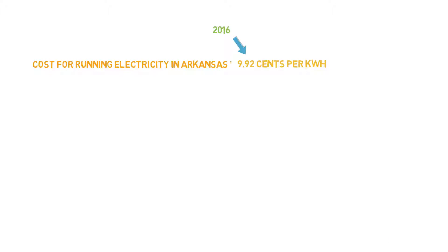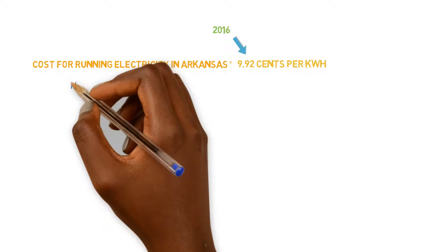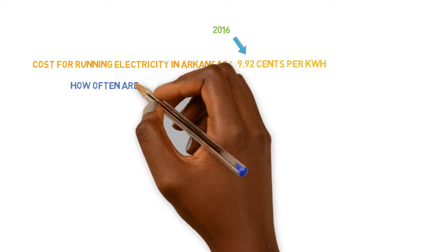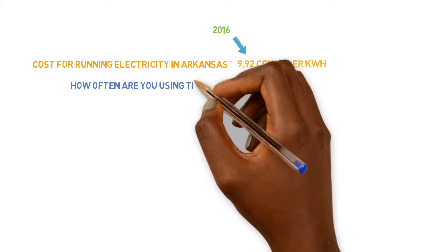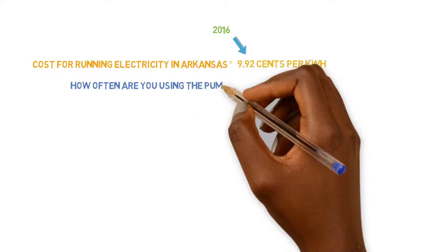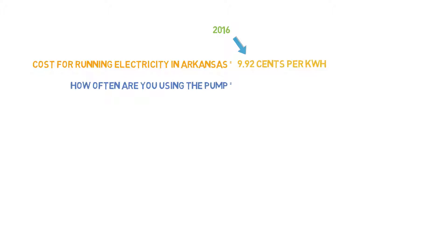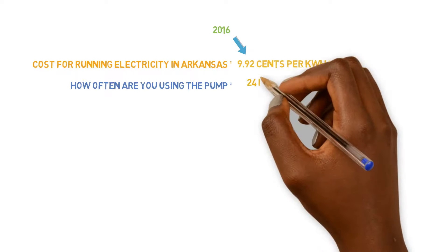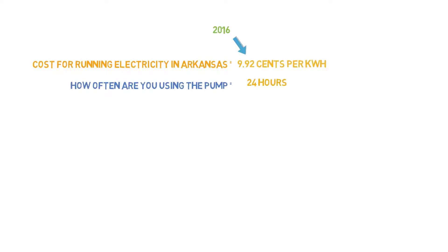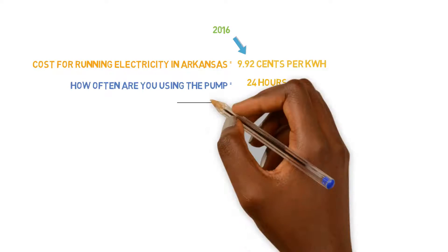What we need to do from there is find out how often we're going to be running this pump. You didn't give a specific amount of time — I don't know if you're using a timer or if it's going to be continuous operation. So I'm going to assume it's going to be continuous operation, running it for 24 hours a day.